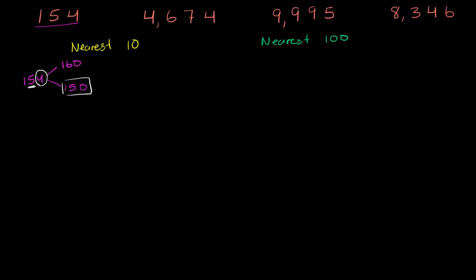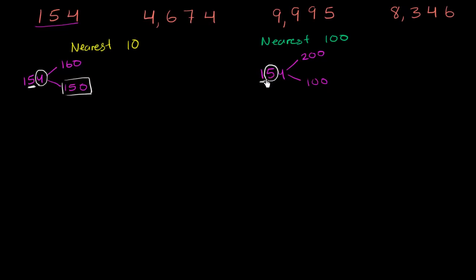Now let's think about that same number rounding to the nearest 100. So 154 to the nearest 100 — if we were to round up, the multiple of 100 above 154 is 200. The multiple of 100 below 154 is 100. When rounding to the nearest 100, we look at the hundreds place, then one place to the right — the tens place. If that place is five or greater, we round up; if it's less than five, we round down. The tens digit here is five or greater, so we round up to 200. Interesting — when we rounded to the nearest 10, since we had a four in the ones place, we rounded down.